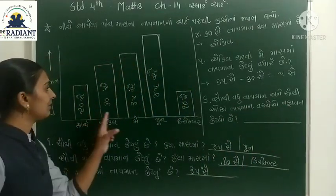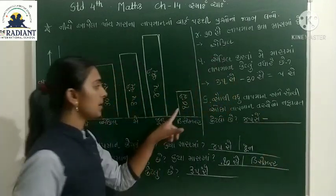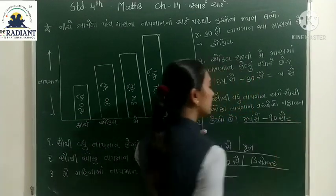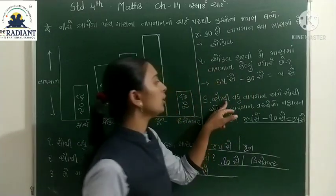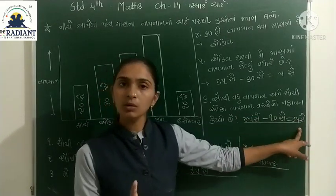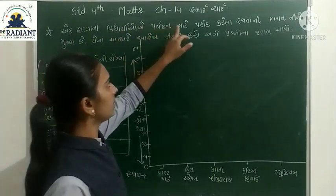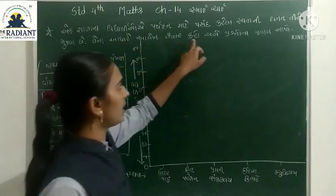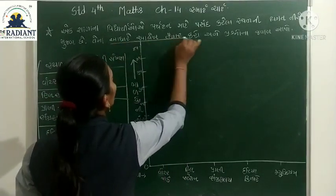સૌથી વધારે તાપમાન 45 સેલ્સિયસ અને સૌથી ઓછું 10 સેલ્સિયસ. 45 માઇનસ 10 = 35 સેલ્સિયસ. એટલે સૌથી વધુ અને સૌથી ઓછા તાપમાન વચ્ચેનો તફાવત 35 સેલ્સિયસ છે. હવે આલેખ તૈયાર કરવાનો છે.